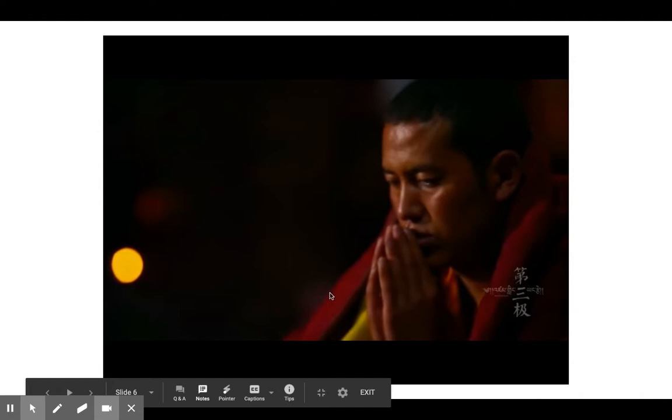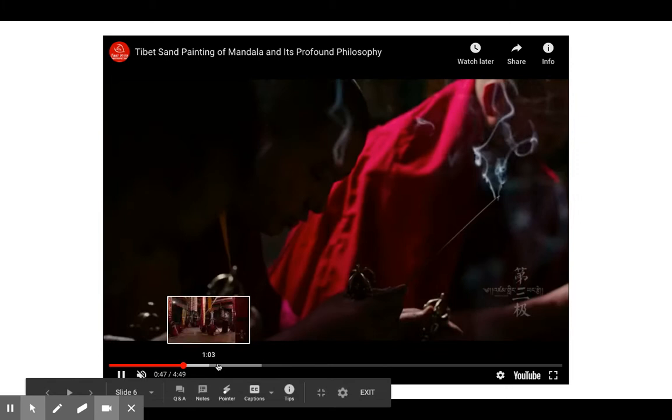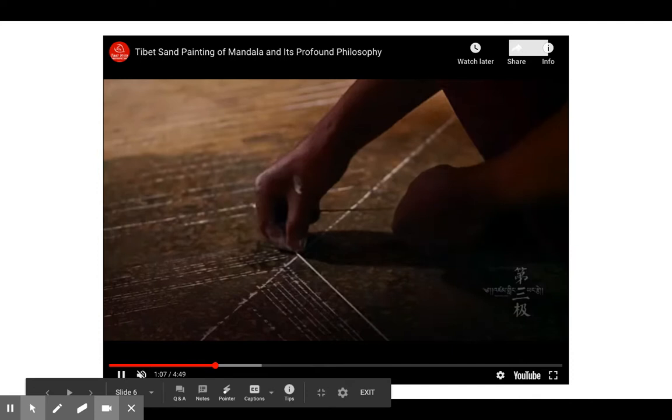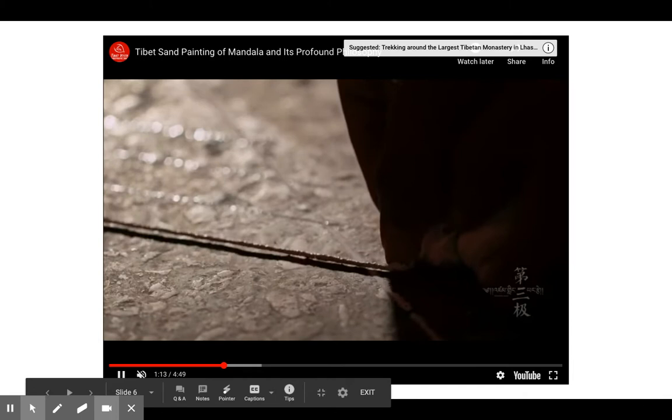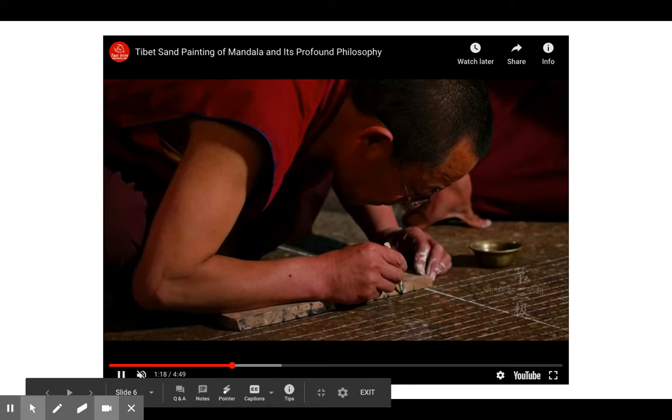They have a ceremony to get ready to make the mandala. They pray, and they get things ready in their temple. Then they start to make the mandala. They use strings covered in chalk to make a map on the floor, so they know exactly where to put each color and each design. It's kind of like how we practice first in our sketchbooks. They make sure everything's perfectly set up before they start.